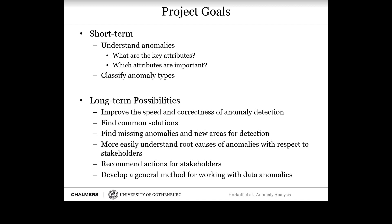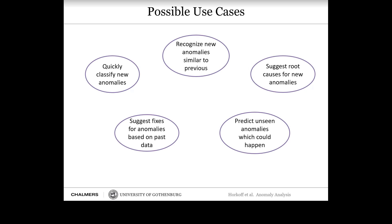We're making some progress but still in relatively early stages, having just started this sprint. Our possible use cases include: quickly classifying new anomalies, recognizing new anomalies similar to previous ones, suggesting root causes for new anomalies, predicting unseen anomalies that could happen, or suggesting fixes based on past data.